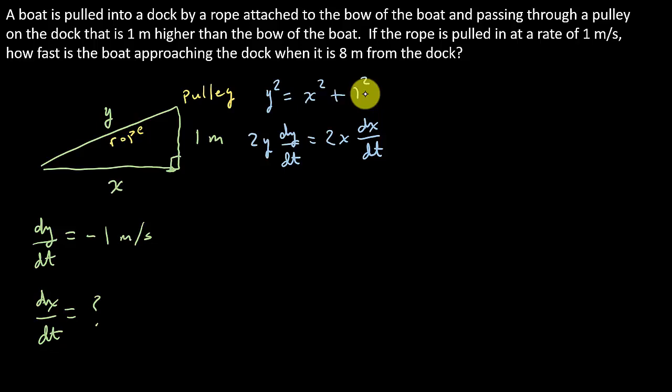Now, what are we looking for? We're looking for DXDT, so I'm going to divide both sides by 2X to get it by itself. So that's going to give me DXDT is equal to Y over X DYDT.